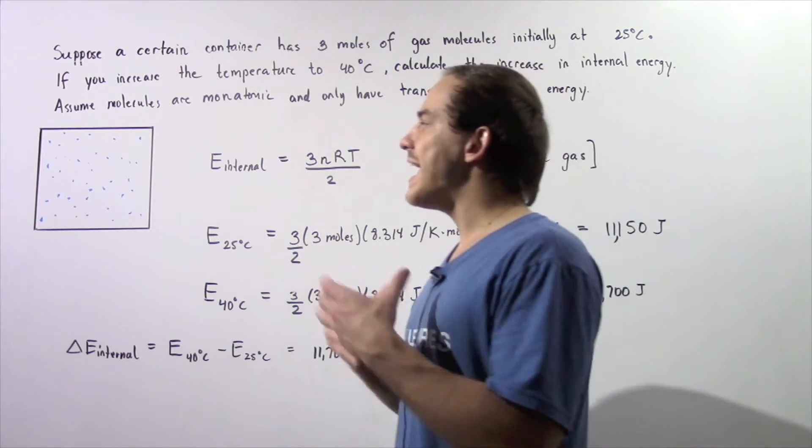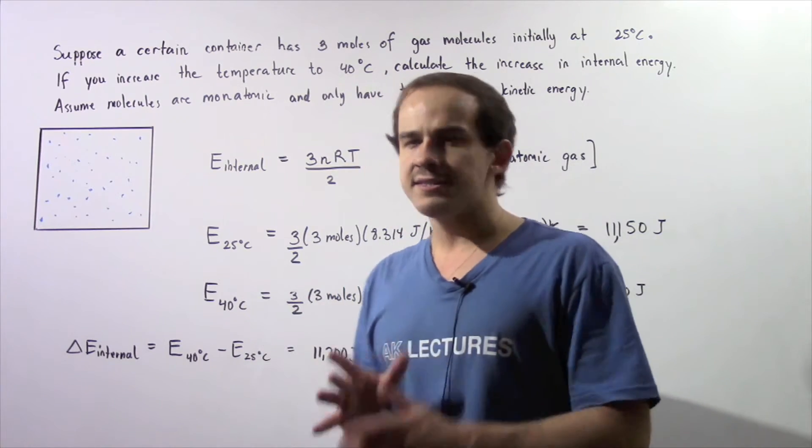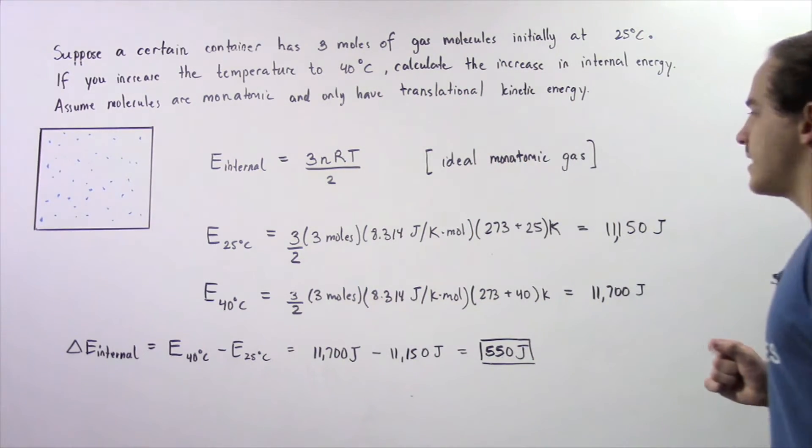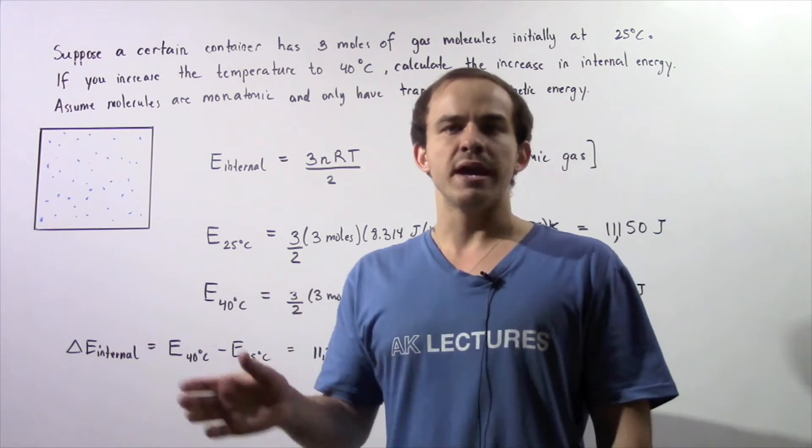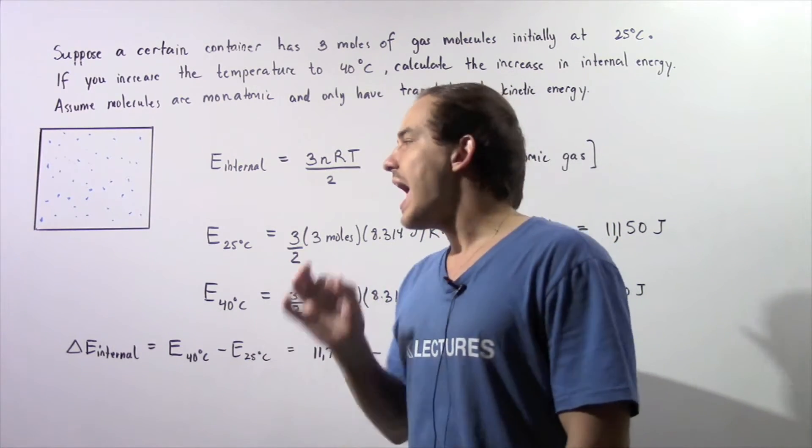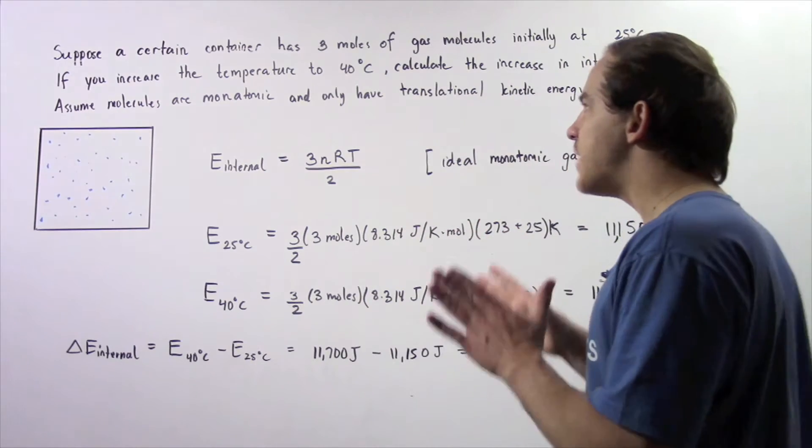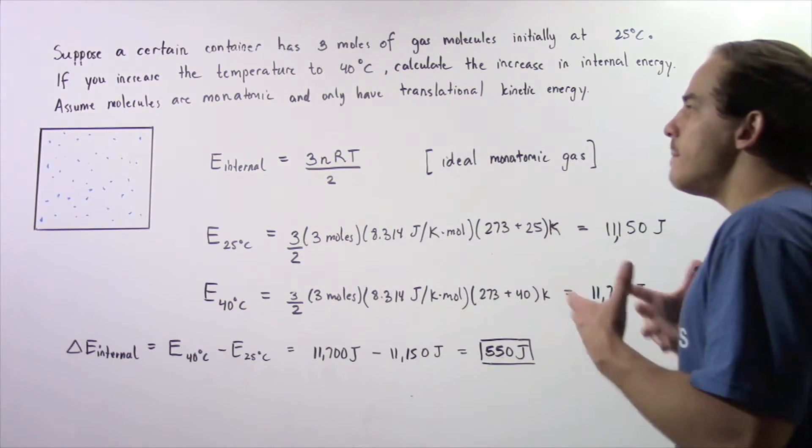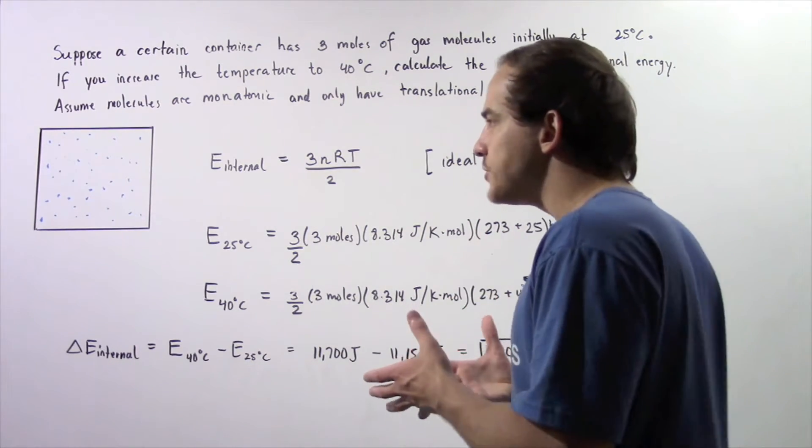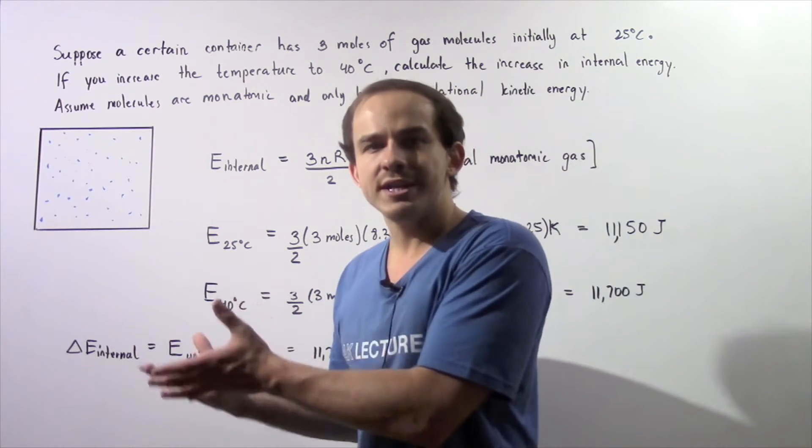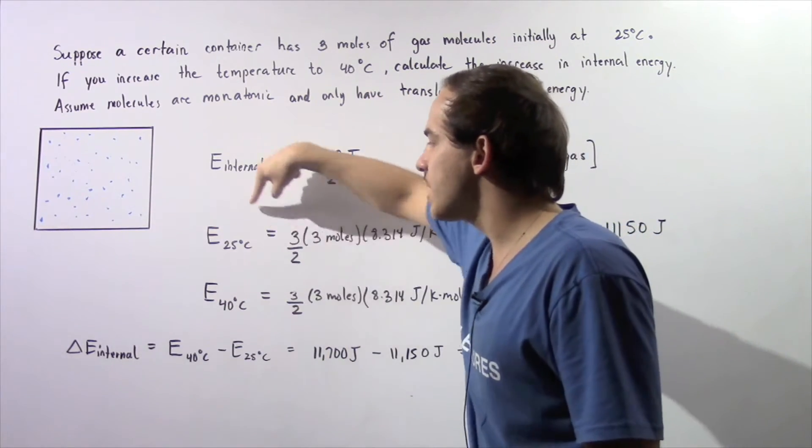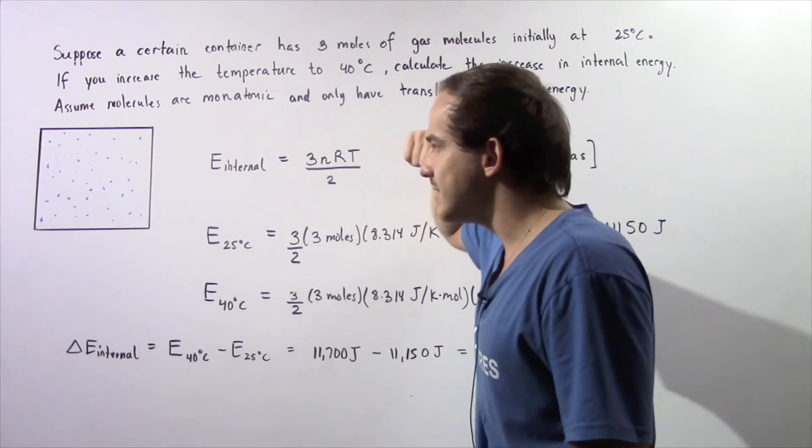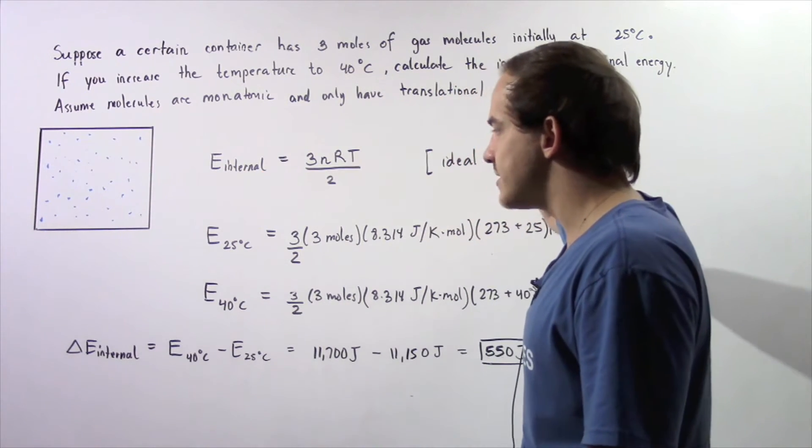So there are three steps in this problem. First we calculate the internal energy of our system at 25 degrees Celsius. Then we calculate the internal energy of our system at 40 degrees Celsius and we take the difference, and that will give us the amount of energy by which our system increases. So let's begin by calculating the internal energy of our gaseous system at 25 degrees Celsius.